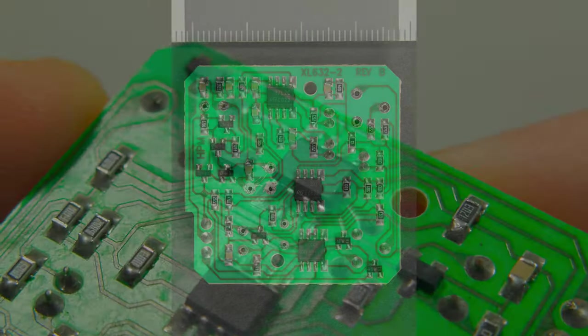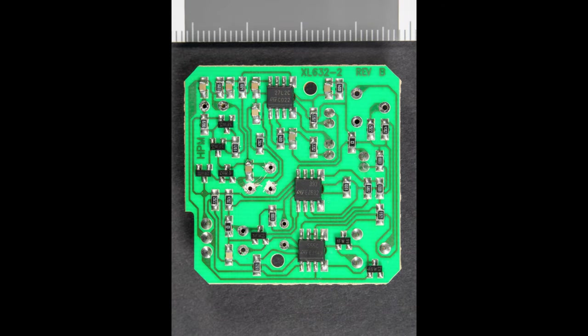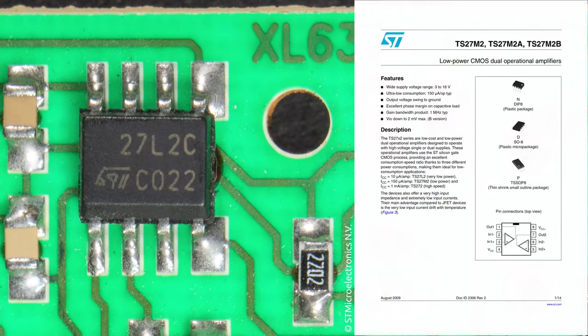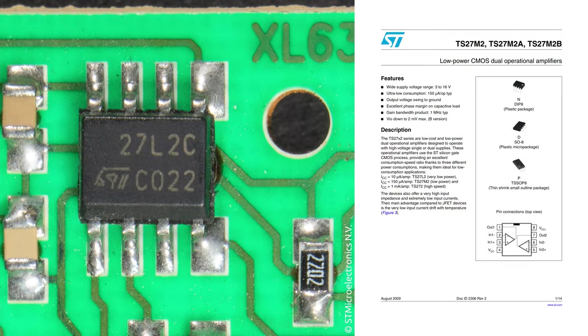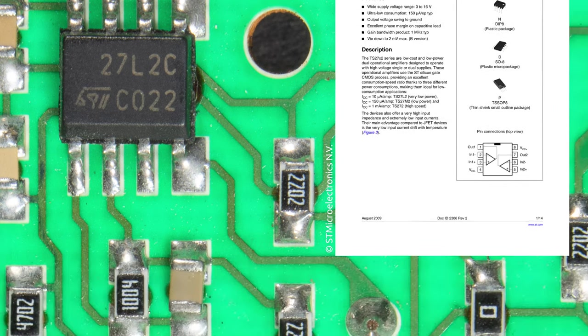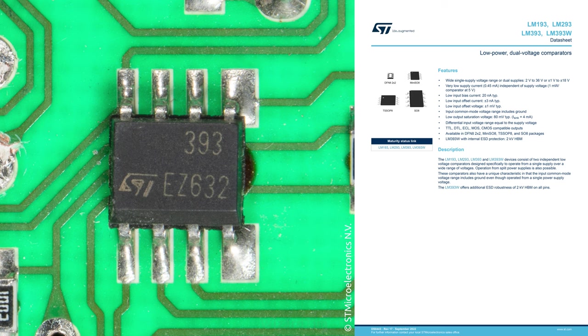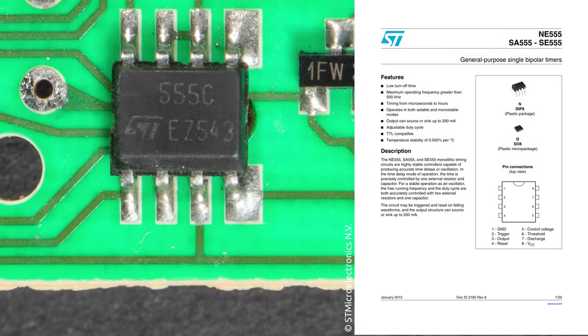And here is of course the actual sensor PCB. There's actually quite a lot on here. We've got three SOIC devices. First of all we have a 27L2C, which is a low power CMOS dual operational amplifier. We also have the Jellybean LM393 dual comparator. And of course no design is complete without the ubiquitous 555 general purpose timer.